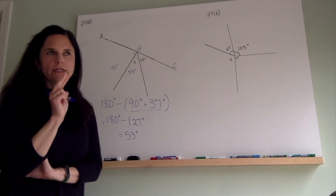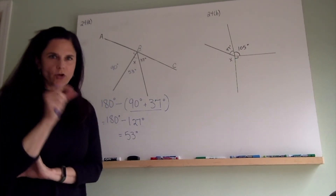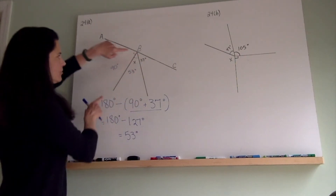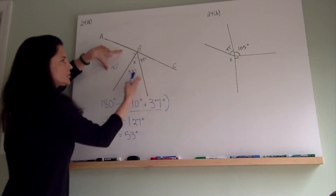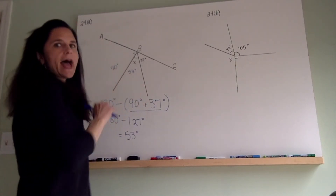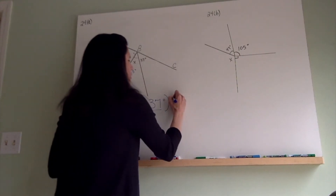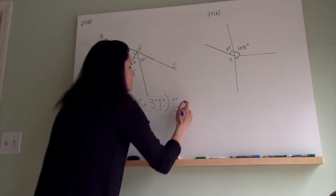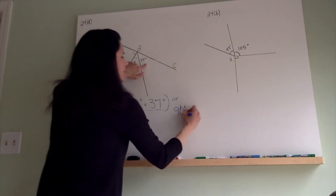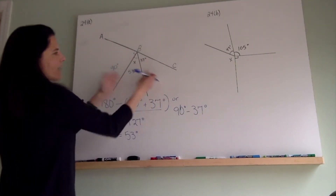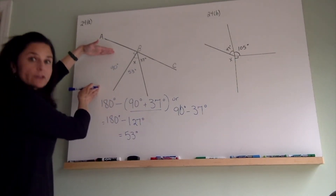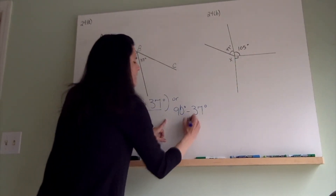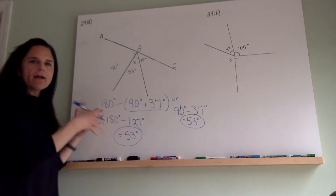Sometimes there are different ways to arrive at the right answer. Another way you could have solved that problem is recognizing that half of the 180-degree angle is 90 degrees, so these two angles must also equal 90 degrees. You could have said angle X equals 90 degrees minus 37 degrees, because those two have to add up to 90 degrees. That's just a faster, more direct way to get your unknown angle, but either way works.